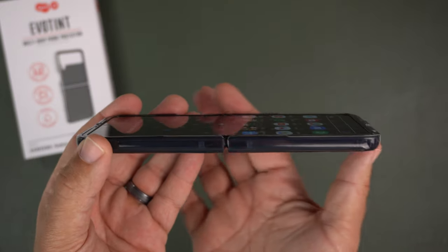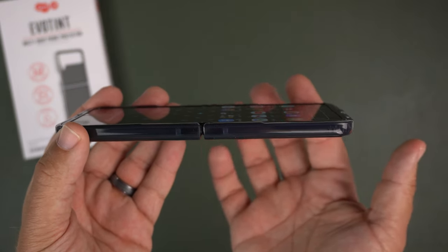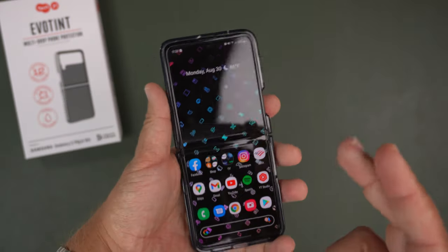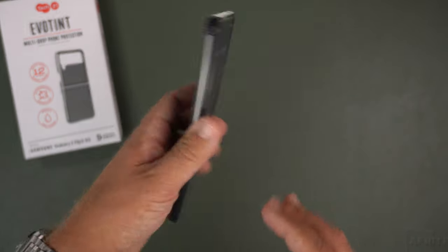On the front of the device, you have some raised lips on the forehead and chin, a little bit of baby lips around the sides. You're getting some protection for your screen if you place it face down.